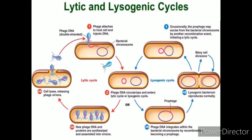The viral DNA cannot be transferred from the host cell to the daughter cell during the lytic cycle, but it can be transferred into the daughter cell during the lysogenic cycle. The lytic cycle doesn't allow genetic recombination of the host chromosome, whereas the lysogenic cycle allows genetic recombination. The lytic cycle ends with the lysis of the host cell, but the lysogenic cycle does not result in the lysis of the host cell.